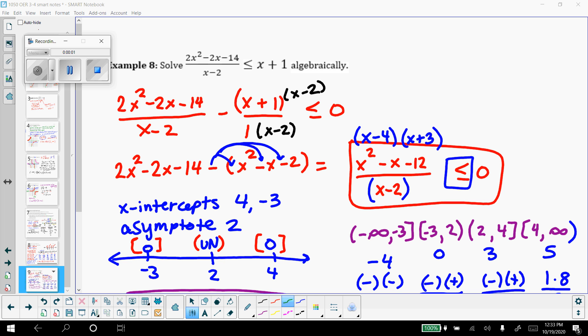Okay, so we moved everything to the left, zero on the right. Get a common denominator by multiplying the numerator and denominator of this non-fractional part by x minus 2 over x minus 2.